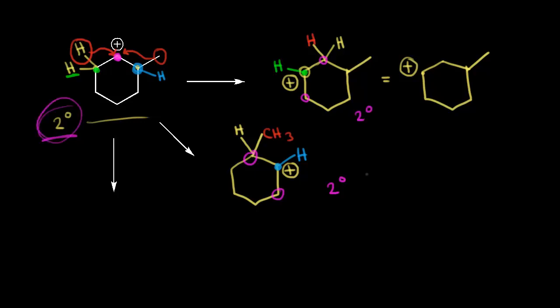Instead of drawing the carbocation with all those bonds, you could just show the methyl group and put a plus one formal charge on that carbon. So finally, what possibilities are left? We could try a hydride shift again, but instead of using one of the two hydrogens on the left, we could try the hydrogen on the right — the one in blue.